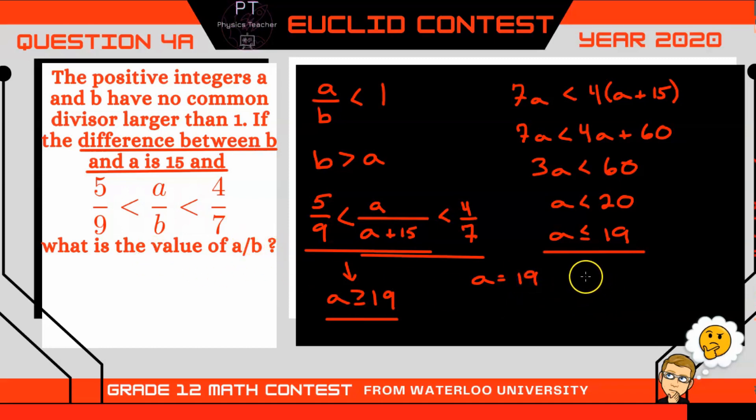Therefore, A over B is going to equal 19 over B, which is A plus 15, or 19 plus 15 gives us 34. Our answer, 19 over 34.